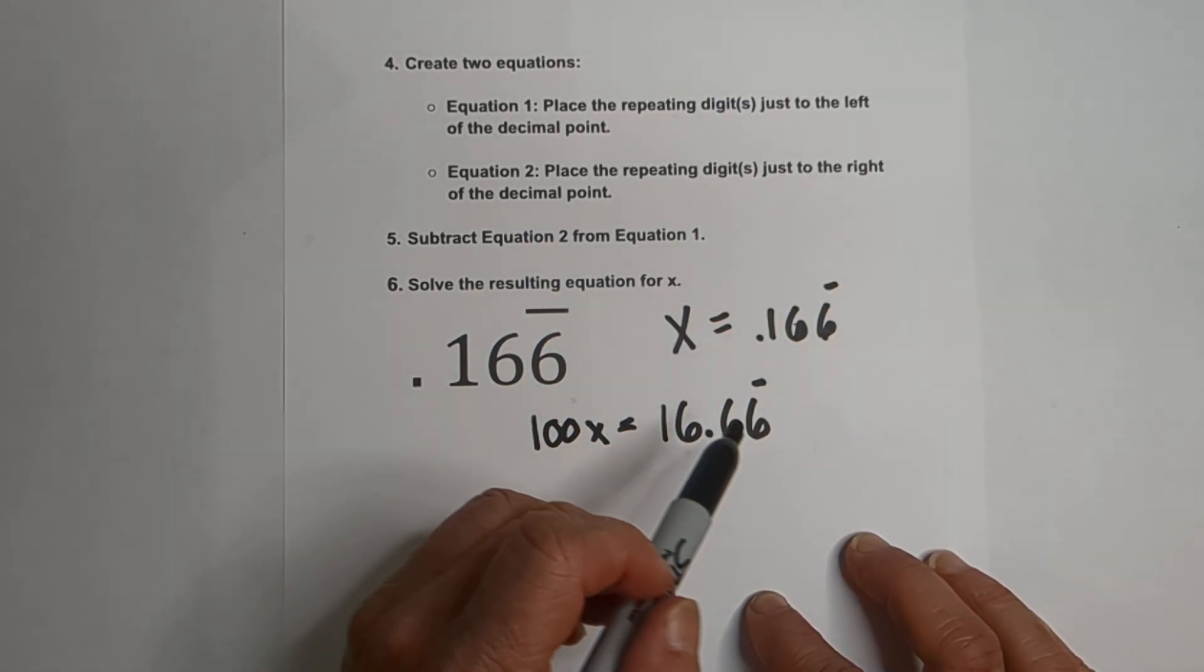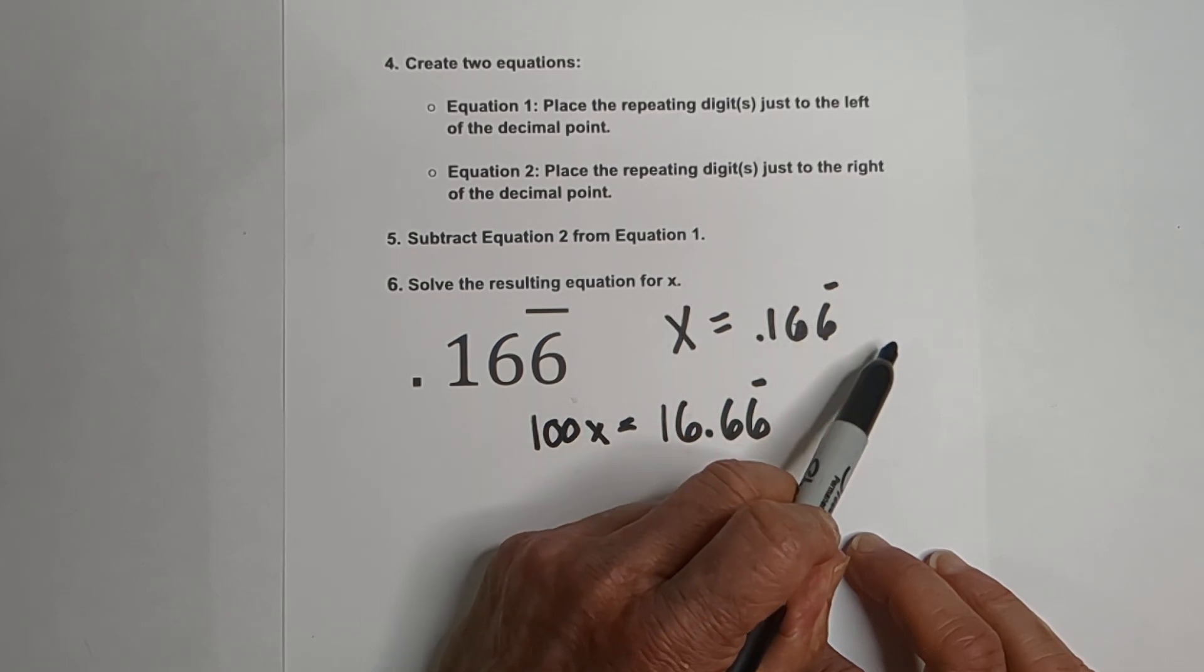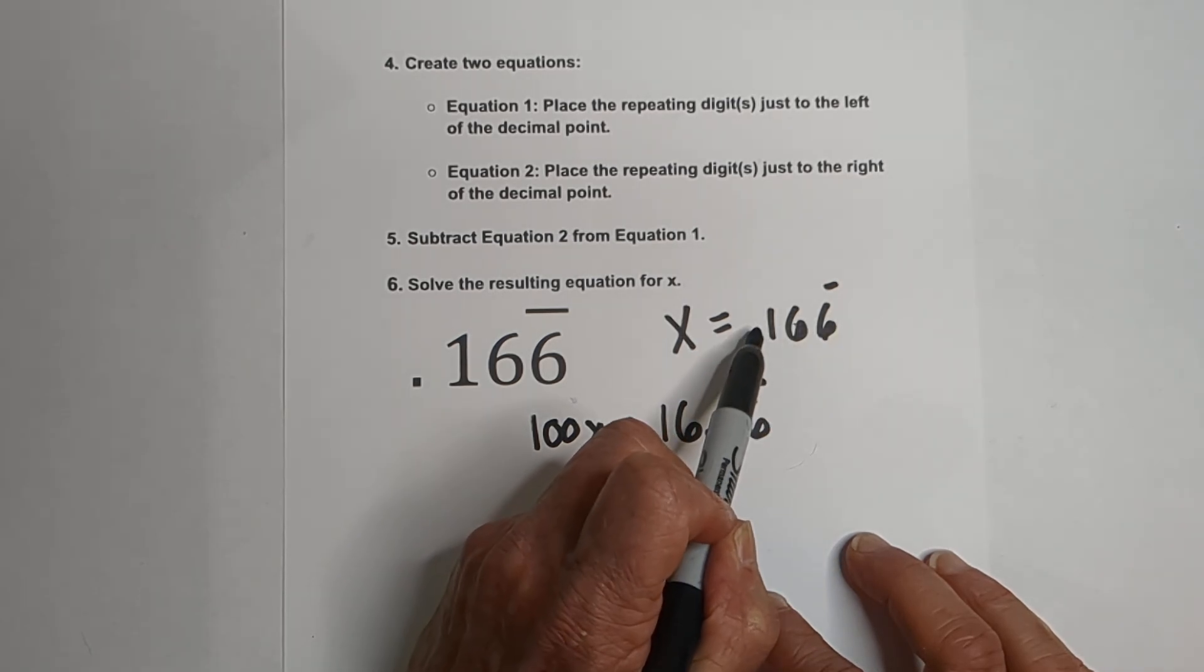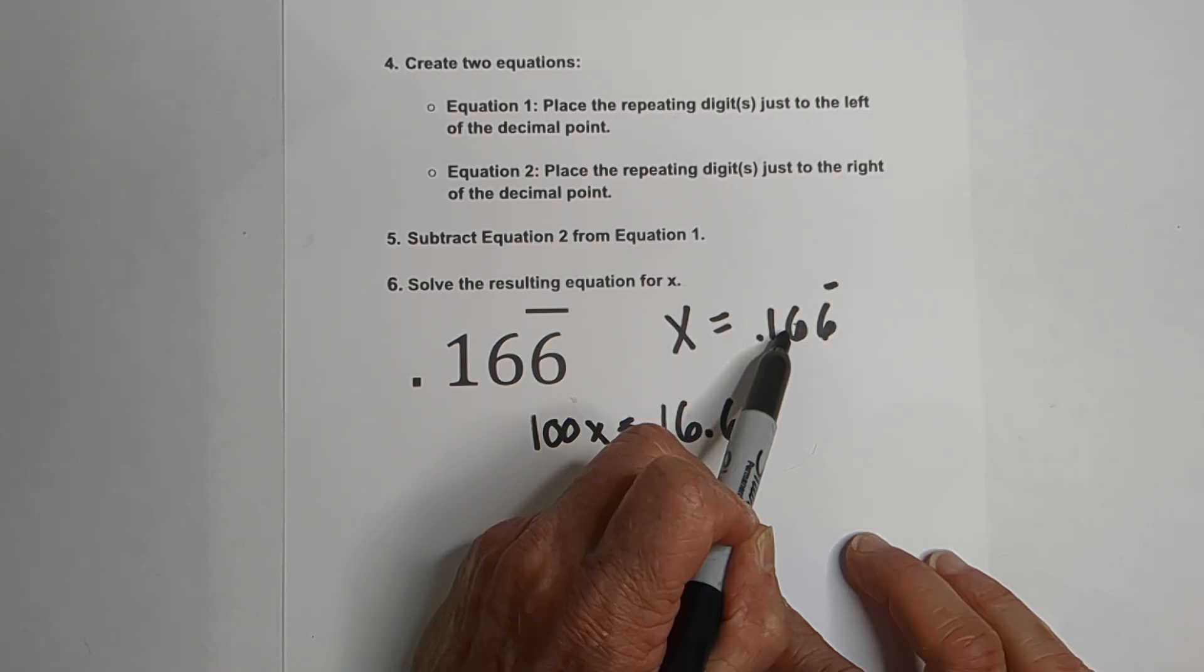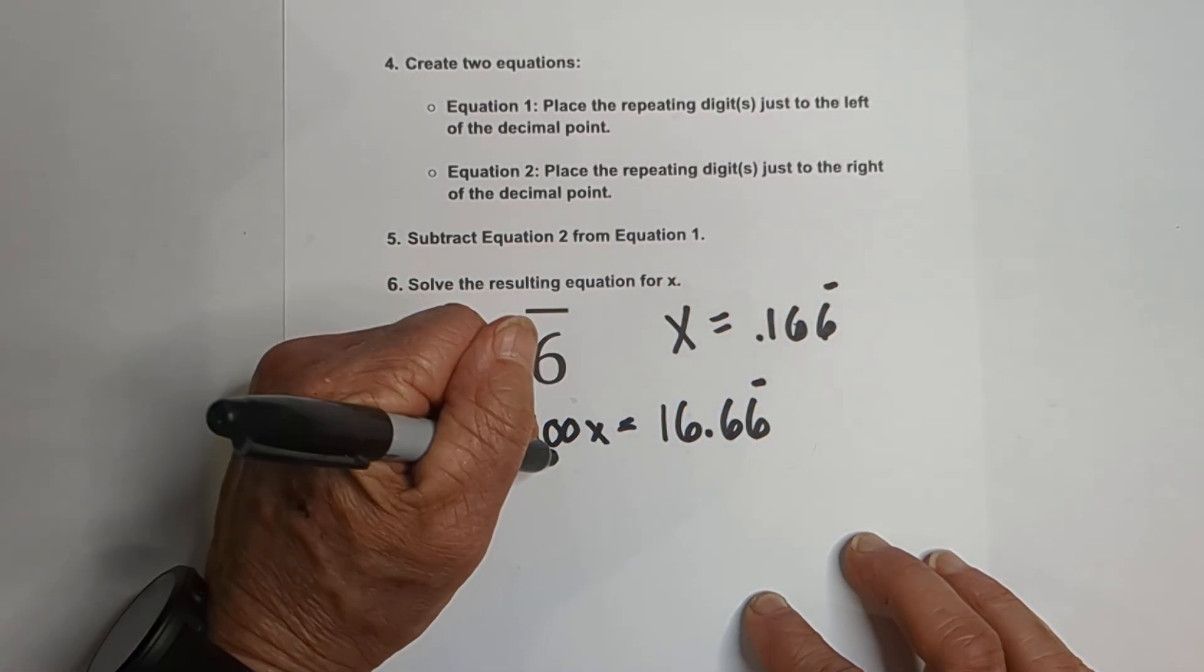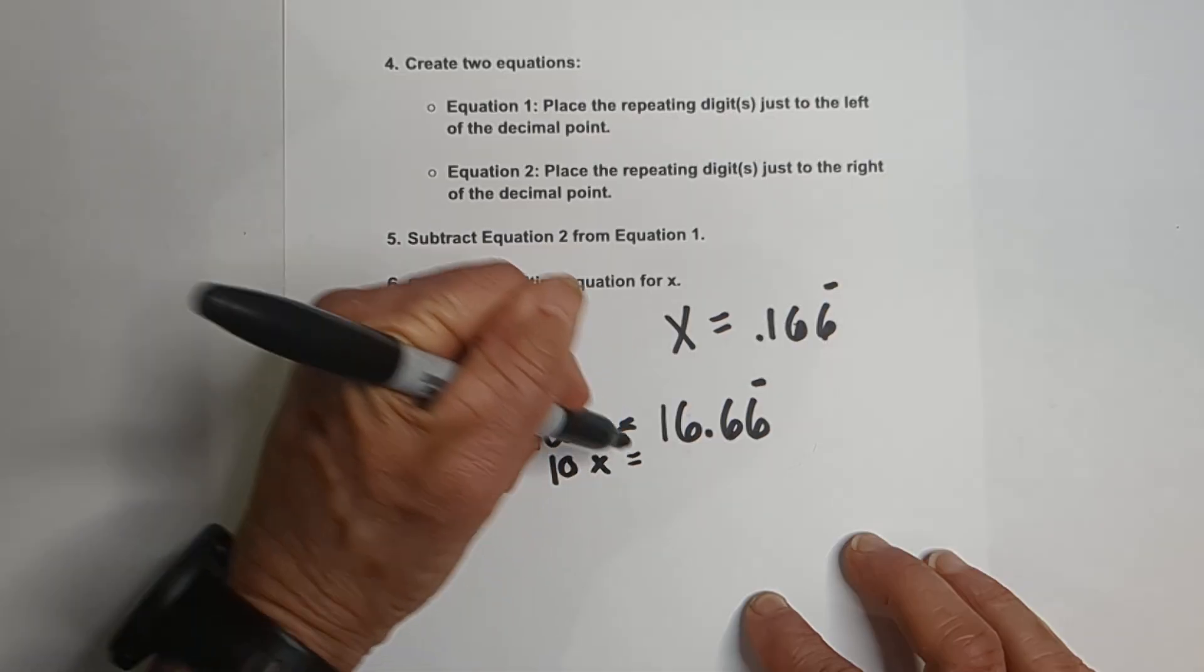Now Equation 2, we want the 6, 6 repeating just to the right. And we can do that by multiplying it by 10. Remember what you do to the left, you need to do to the right.